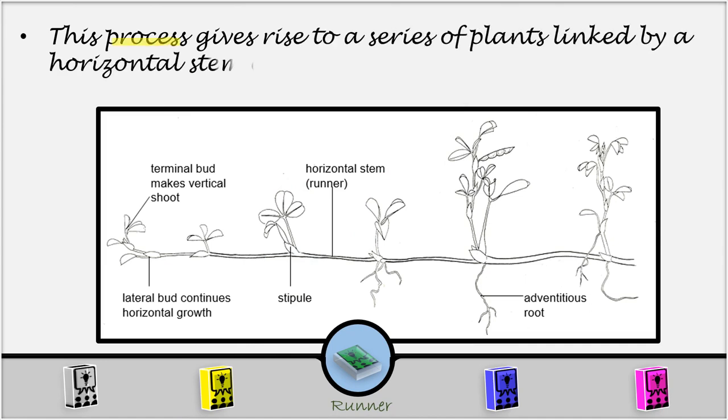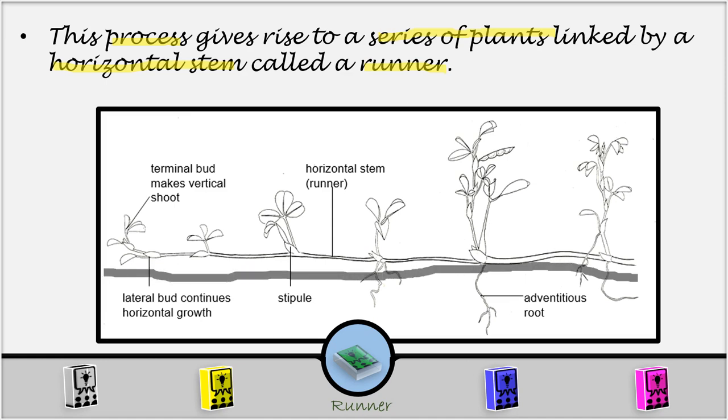This process gives rise to a series of plants linked by a horizontal stem called a runner. Now, this whole process of growing, the runner growing from one parent plant going on like that, it goes on forming the internodes. So, here we had a plant. Now, after some time, it moved and it formed another node here, and at the node we developed a bud, which developed an aerial shoot, and then adventitious root. Then afterwards, a runner developed, and then at the node here, it developed another plant.